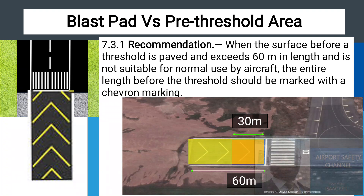The 60-meter chevron marking may serve as a secondary reminder to pilots that there is no stopway at the end of the runway. Stopways do not carry this marking, so when you see this marking immediately after the threshold of the runway, it will tell you that there is no stopway at the end of the runway. The marking may also alert pilots that though the location is paved, it is not a displaced threshold. The only purpose it is serving is that of a blast pad.